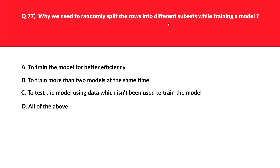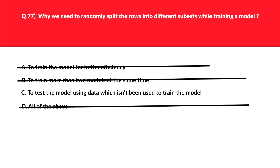Hands-on experience helps answer these types of questions. This is a fundamental level of Azure, so not everyone may be familiar with the practical side. If you have done hands-on work, you'll know we typically use a 70/30 train-test split to divide the dataset. This tests the model using data it hasn't been trained on. So the correct answer is option C.